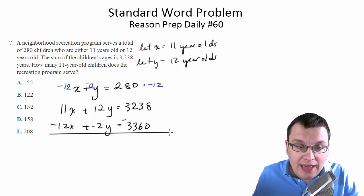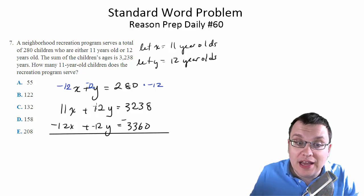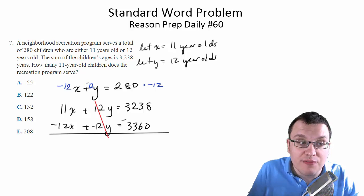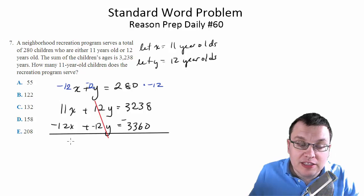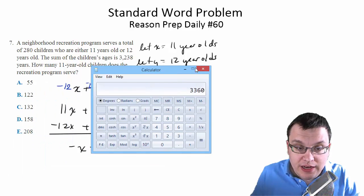And now we'll go ahead and add these up. So the whole reason why we multiply by negative 12 was so that the 12y and the negative 12y cancel and we're just left with our x. So 11x plus negative 12x is negative 1x or just negative x. And when we add these together, we're going to get pretty much the answer directly.